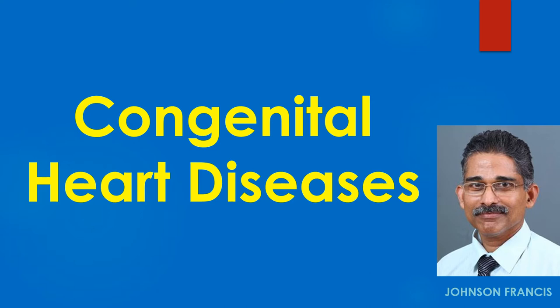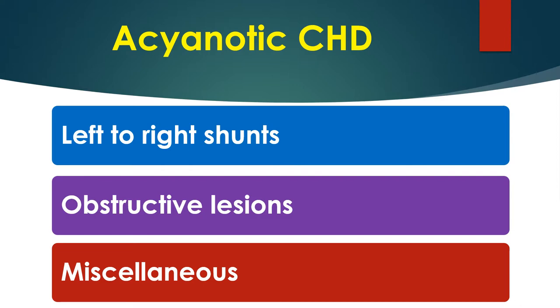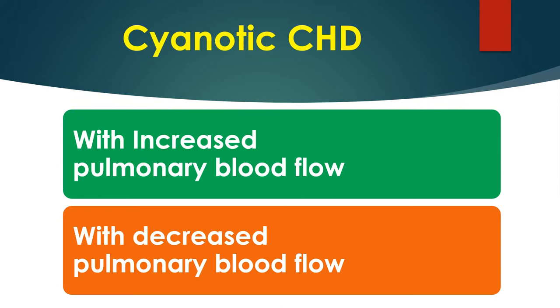In this lecture, we will review some common congenital heart diseases. Congenital heart disease can be broadly classified into cyanotic and acyanotic. Acyanotic congenital heart disease can be further subdivided into left to right shunts, obstructive lesions, and a miscellaneous group. Cyanotic congenital heart disease can be classified into those with decreased pulmonary blood flow and those with increased pulmonary blood flow.